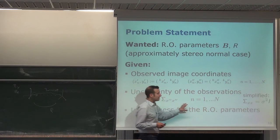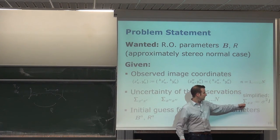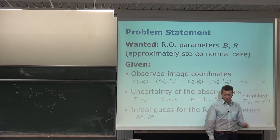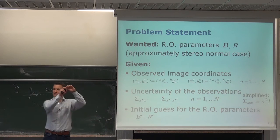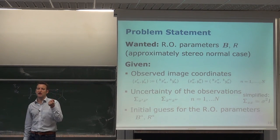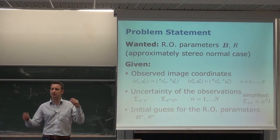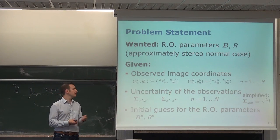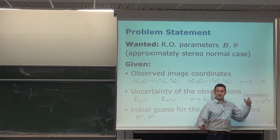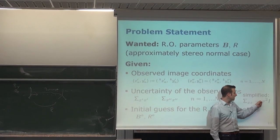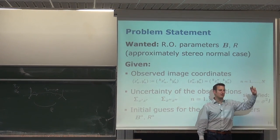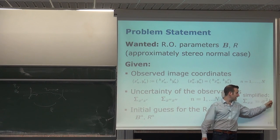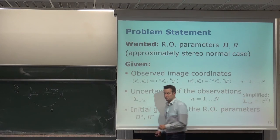We assume the measurements are not correlated. This means we can estimate the point locations with some uncertainty, equal for all points, represented by an identity matrix scaled by a variance — a diagonal matrix with the same uncertainty in x and y for every point. Of course, if we could measure the x location more precisely than y, or some points more accurately than others, we would place different variances on the diagonal of the covariance matrix.